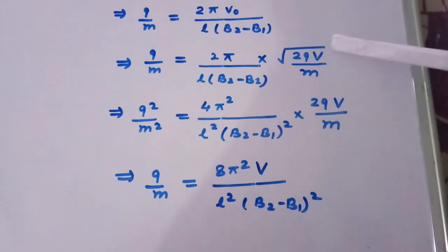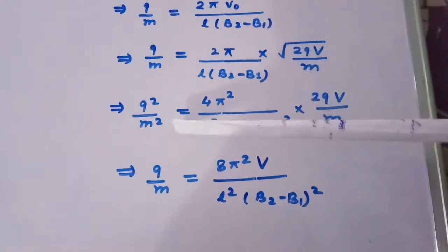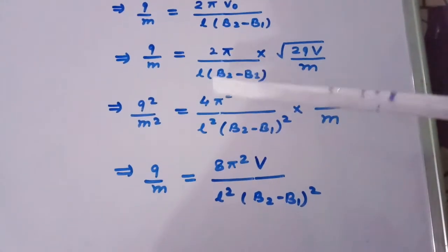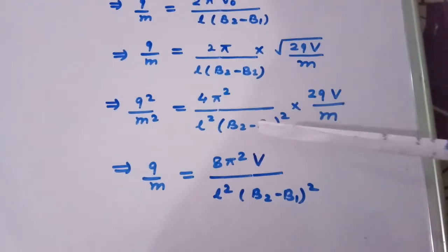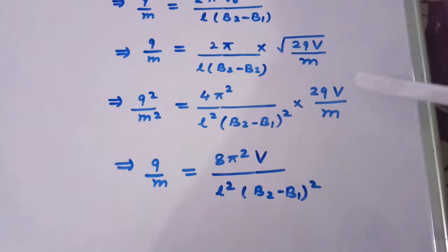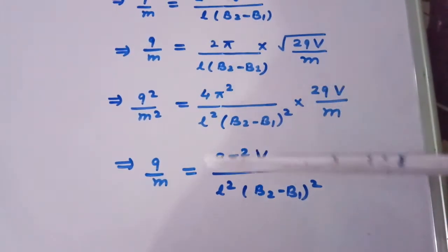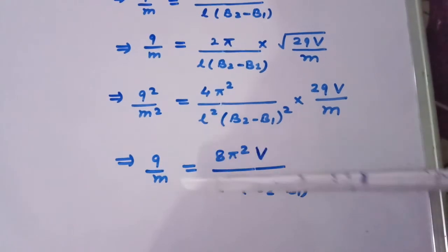Square both sides so we get Q square upon M square equal to 4 pi square divided by L square times B2 minus B1 whole square multiplied by 2QV divided by M. One Q upon M will cancel out from both the sides and we will be left with Q upon M.